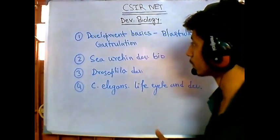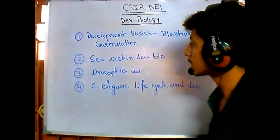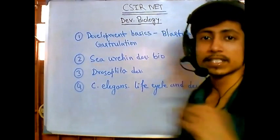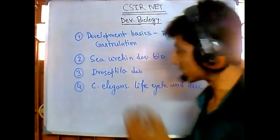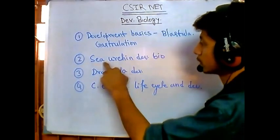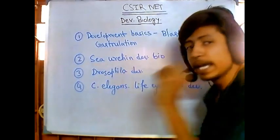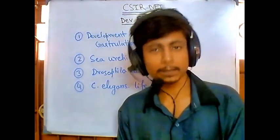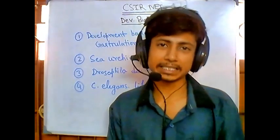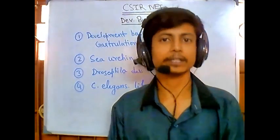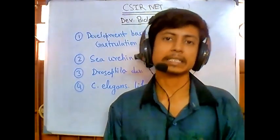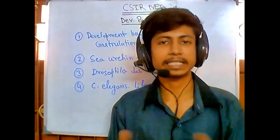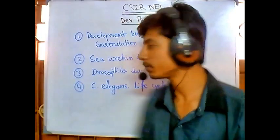After understanding the basics — including blastulation and gastrulation — the second focus is the developmental biology of certain organisms. Specifically, the developmental biology of sea urchin, especially the mating of sea urchin, fertilization in sea urchin, and gamete production and fertilization — these are very important.